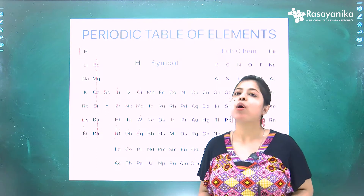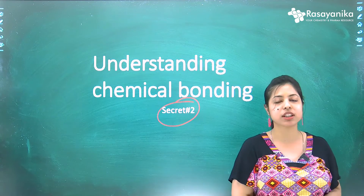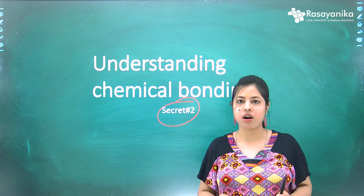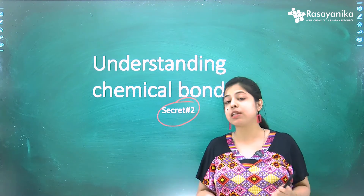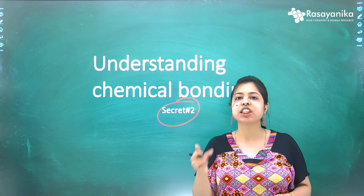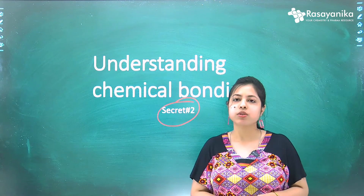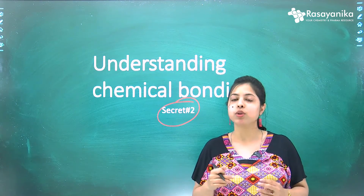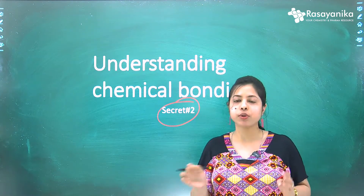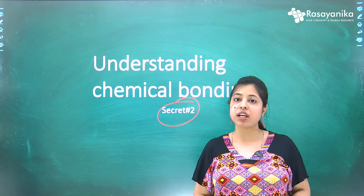Secret number two is understanding chemical bonding. Chemical bonding is another basic foundation of inorganic chemistry. You need to know what types of bonding are present among molecules or atoms — covalent, ionic, or otherwise — and their general periodic trends. If you don't know bonding, it will be very difficult to understand molecular structures, three-dimensional geometry, and everything else. Understanding chemical bonding is our second important secret.